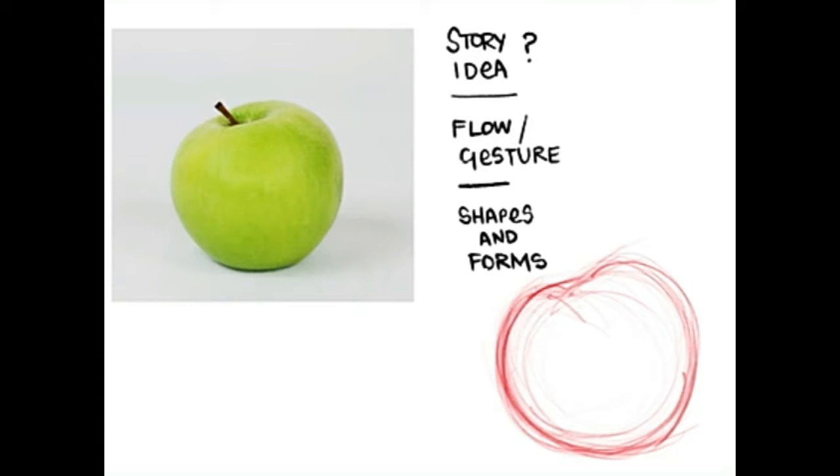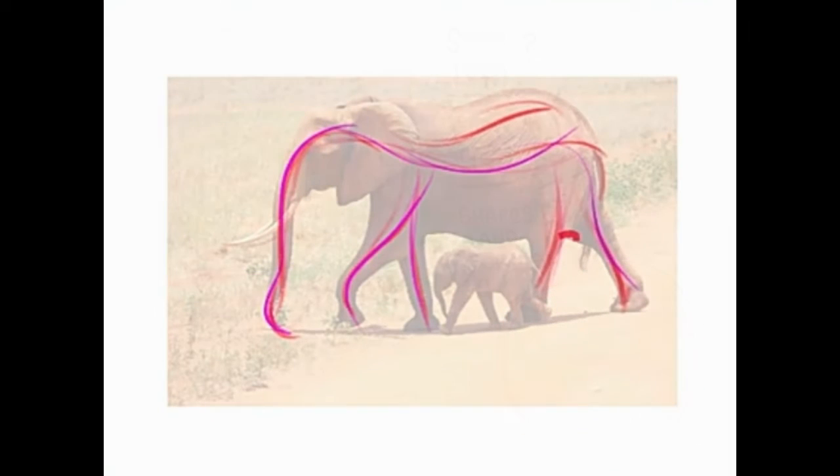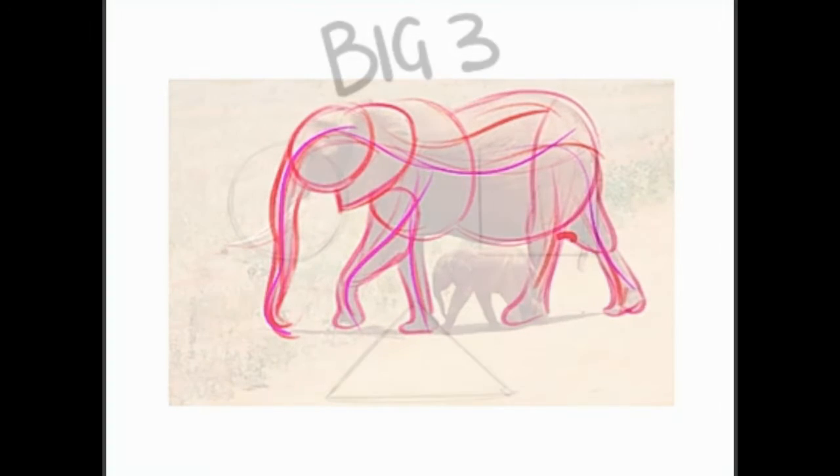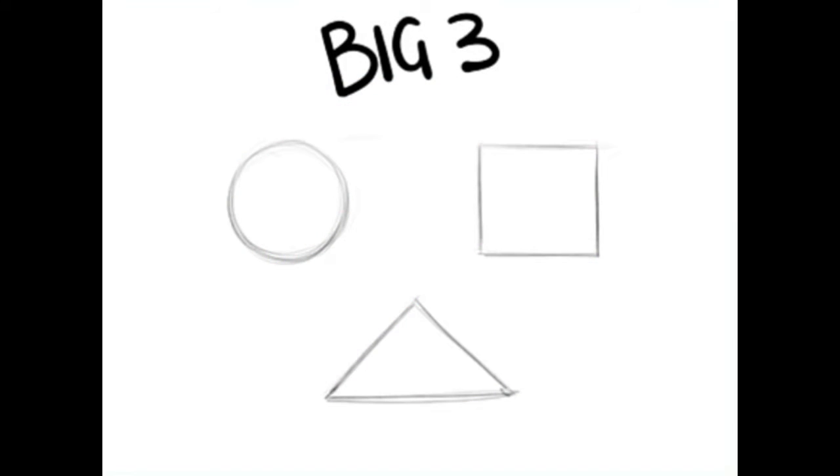A drawing that has no gesture is stiff, but if you add gesture to it, it makes it more alive. The gesture can be one line or a bunch of scribbly sketches. Then you get the flow and gesture, and on top of that, your shapes—your basic shapes. You need to understand this: you can really draw anything you want by using these three shapes.